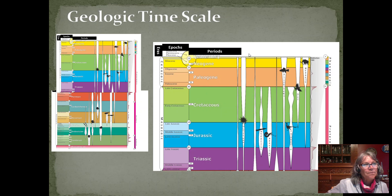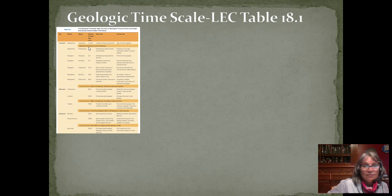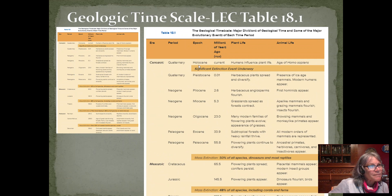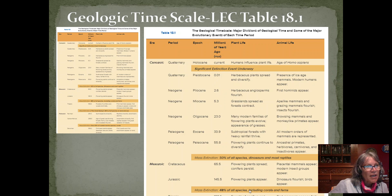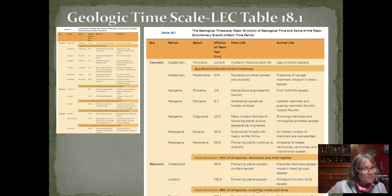We read geological time scales with the oldest at the bottom and the youngest at the top. Millions of years ago — MYA — tells us what was going on and what happened. Here we see a mass extinction at 65 MYA: 50% of all species, dinosaurs and most reptiles, are wiped out. We have another mass extinction between the Triassic and Jurassic where 48% of all species are wiped out, including corals and ferns. That mass extinction allowed flowering plants to appear and dinosaurs to begin to flourish.